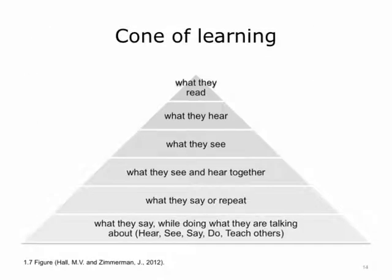As we prepare to go to the next unit, think about the cone of learning. Learners will retain 10% of what they read, 20% of what they hear, 30% of what they see, 50% of what they see and hear together, 70% of what they say or repeat, and 90% of what they say while doing what they are talking about. Hear, see, say, do, and teach others — think about this as we look at the principles of adult learning and how we can create effective training.